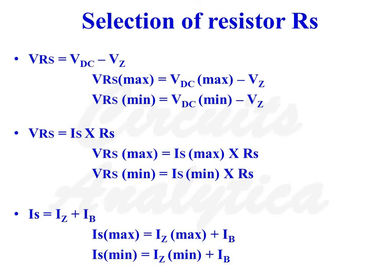For the selection of resistor RS: VRS equals VDC minus VZ. VRS max equals VDC max minus VZ, and VRS minimum equals VDC minimum minus VZ. According to Ohm's law, VRS equals IS times RS. So VRS max equals IS max times RS, and VRS minimum equals IS min times RS.